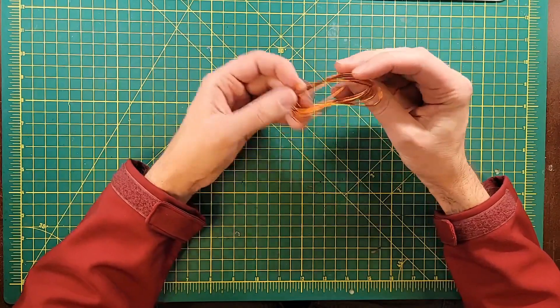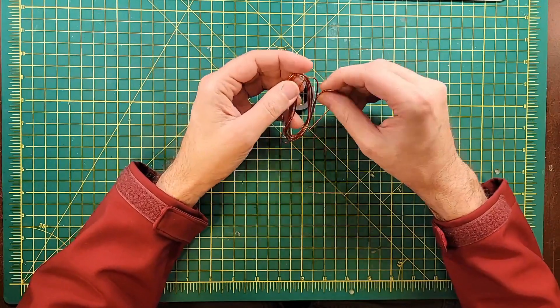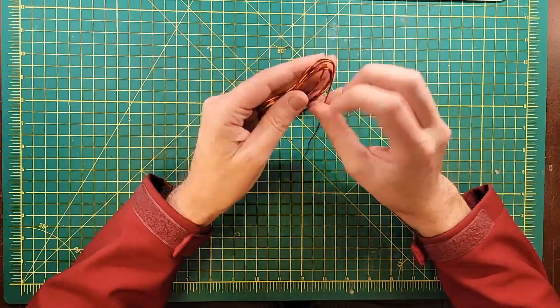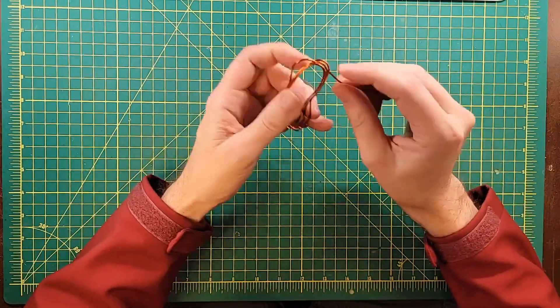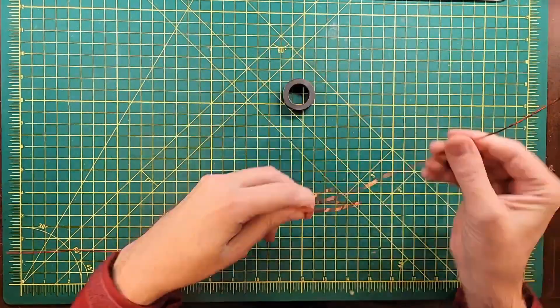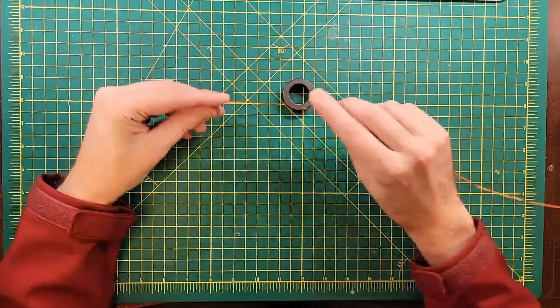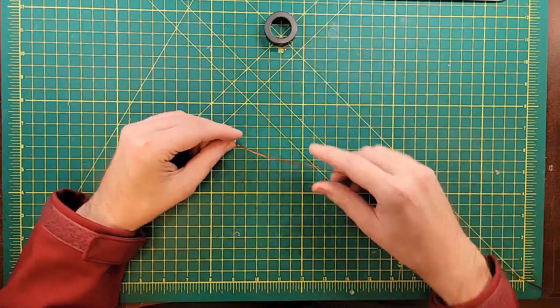The first thing you're going to need to do is get this unwound so that we can work with it. Don't worry too much about how straight it is or how bent up it is, because we're gonna wind it around the core here.